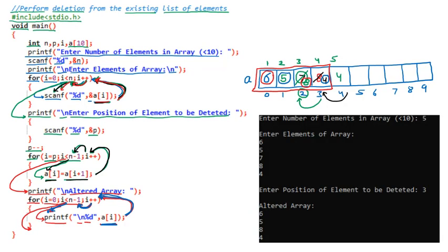When we run this program on the compiler, the output is: 'Enter number of elements in array' — user enters 5. 'Enter elements of array' — user enters 6, 5, 7, 8, and 4. 'Enter position of element to be deleted' — we enter 3. The program displays the altered array: 6, 5, 8, and 4. The third position element, which is 7, is deleted successfully. This is the program for deleting an element from a specific location in an array.